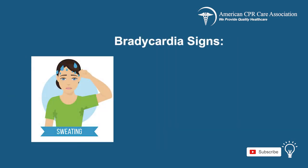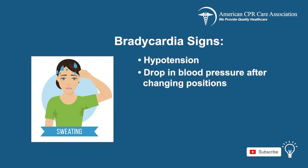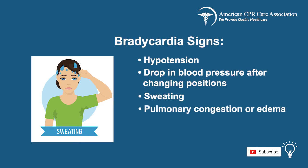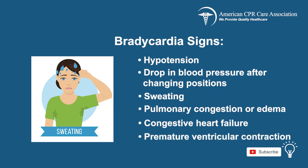Some signs of Bradycardia are hypotension or low blood pressure, orthostatic hypotension or a drop in blood pressure after changing positions like going from sitting to standing, sweating, pulmonary congestion or edema meaning an increase of fluid in the lungs, congestive heart failure or when the heart does not pump enough blood, and premature ventricular contractions or PVCs, which is when the ventricle produces abnormal heartbeats.